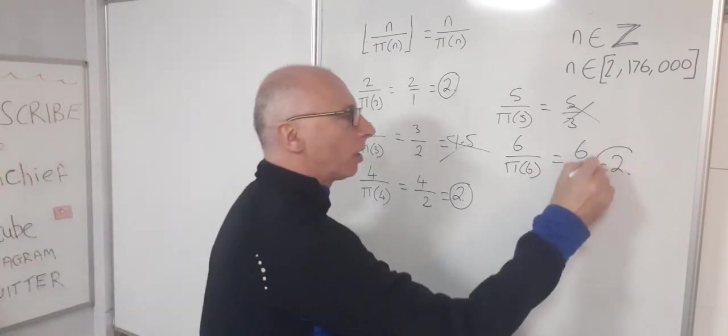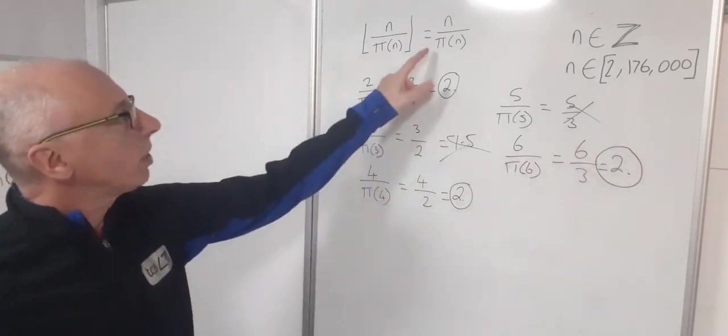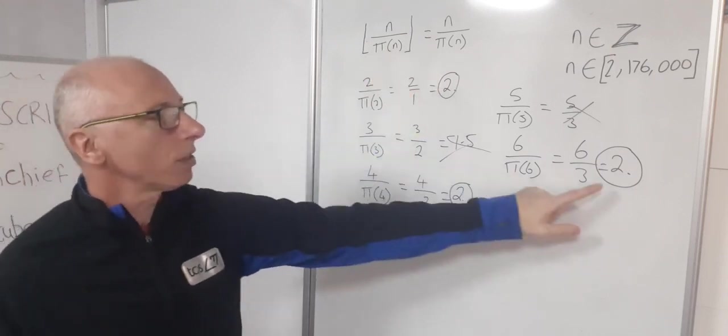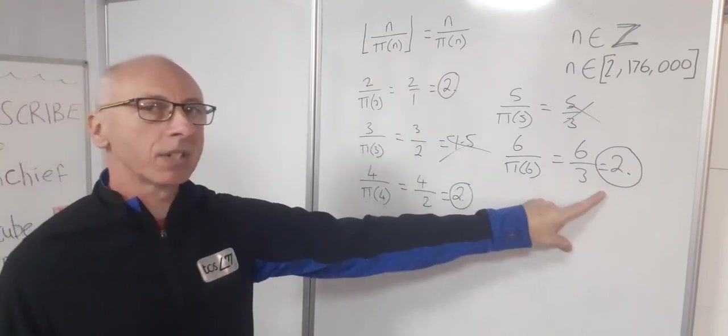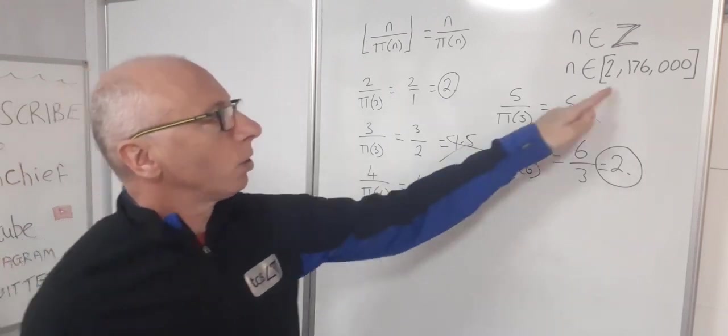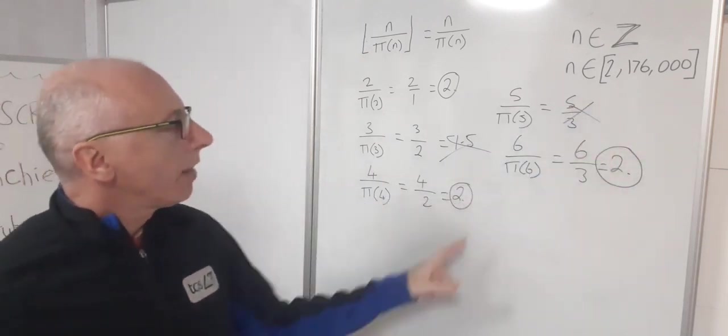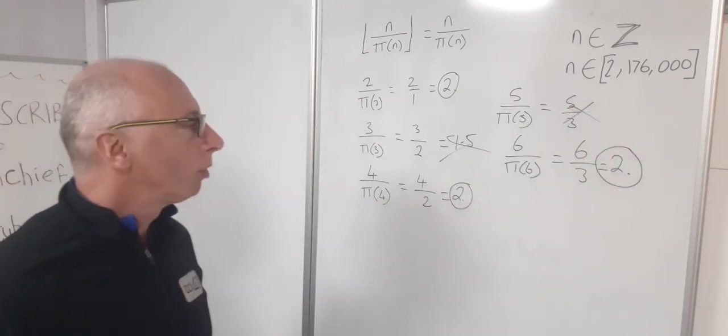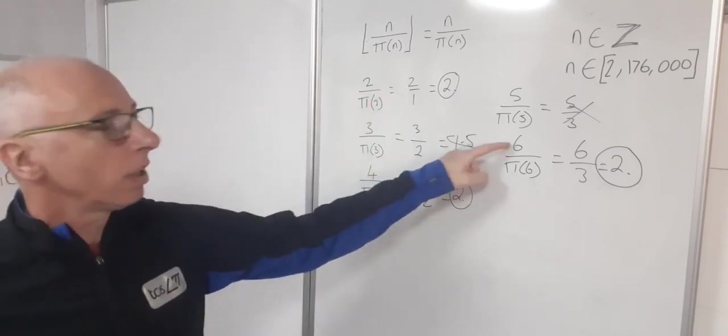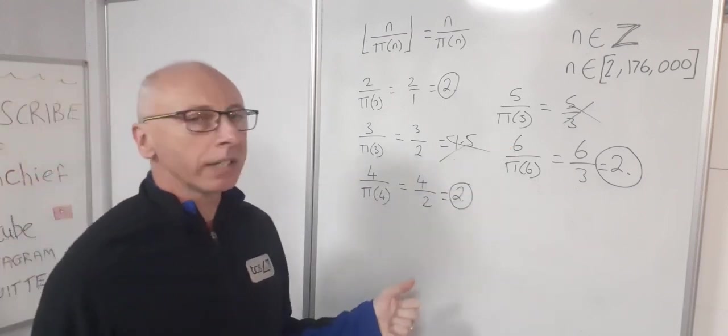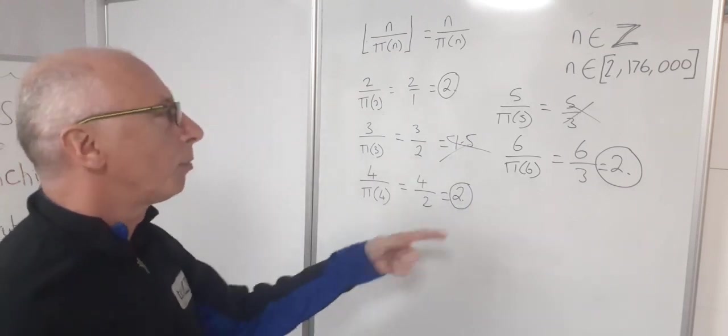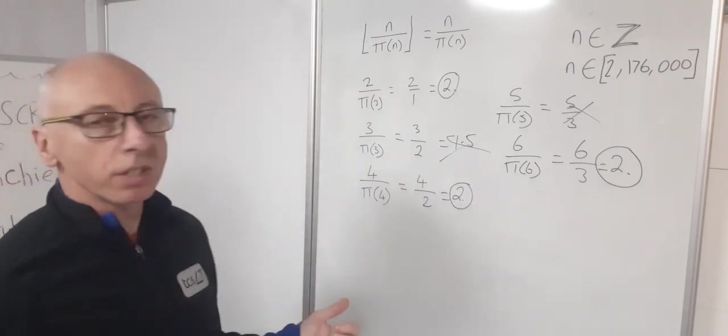Okay, so now we've found integer solutions of n over pi of n using this when this occurs. We've found three numbers that give us an exact integer of 2. Now I've gone through the sequences all the way up to 176,000 and there is only three numbers that will give us the number 2 and that is when n equals 2, n equals 4 and n equals 6. If you put n equals 8 or 10 or 12 you will not get 2. So let's just take this off the board and then we'll have a look and see what next integers we can come across.